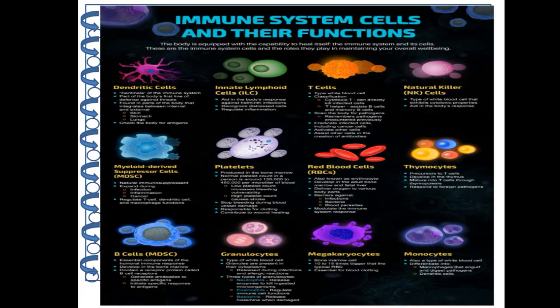In the diagrams you can see the different types of cells such as red blood cells, platelets, macrophages, B cells, T cells, megakaryocytes, monocytes, thymocytes, natural killer cells, dendritic cells, and macrophages. You can write short notes about them.